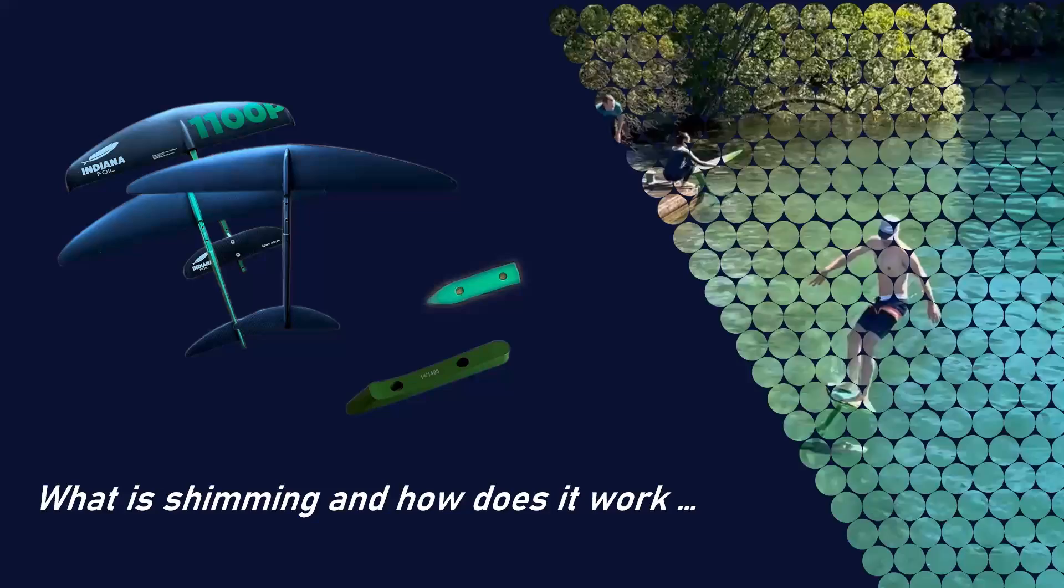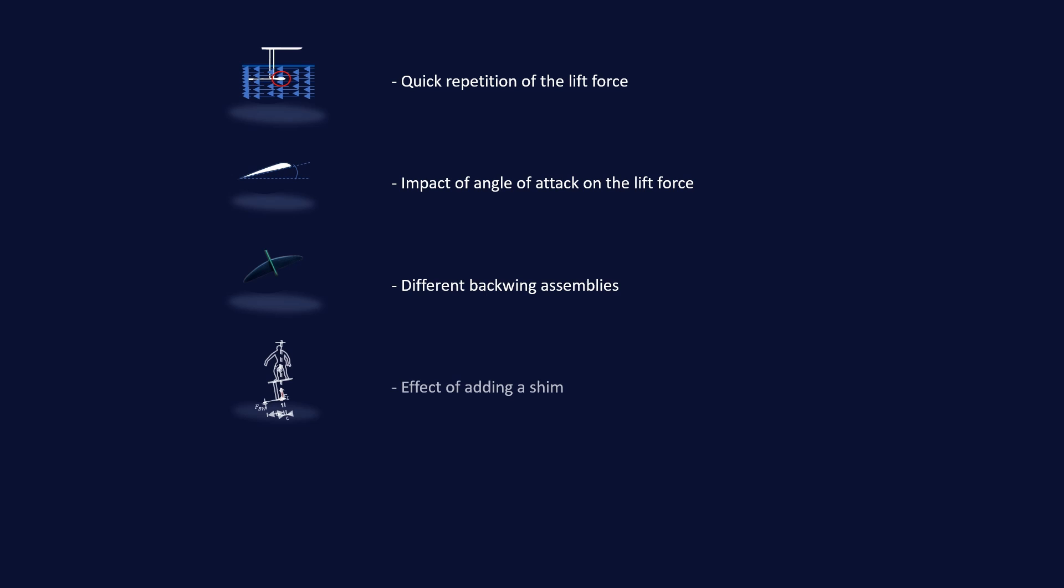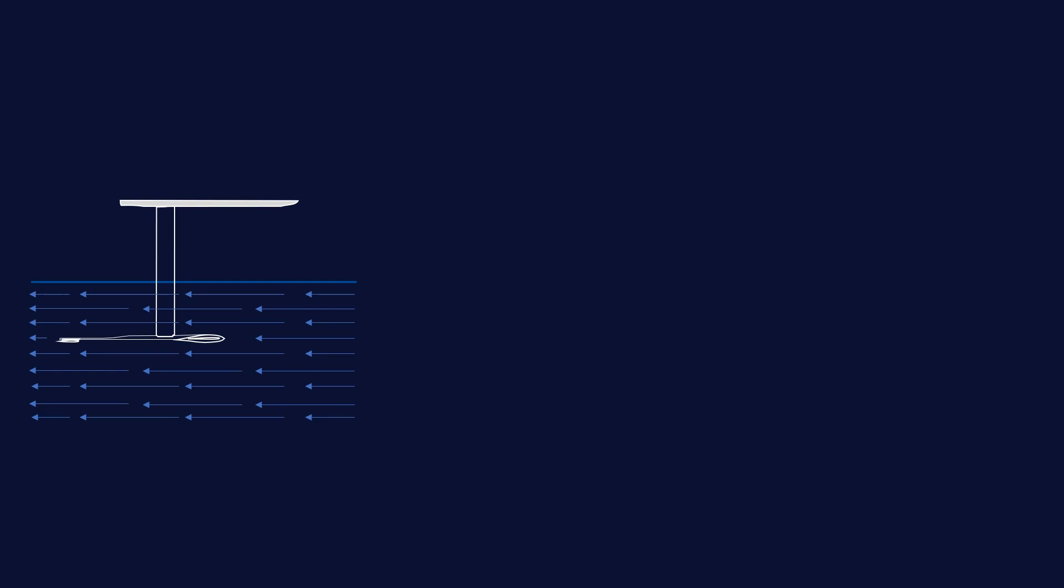To be in the position to explain shimming in the context of foiling, I will start with a quick recap about the lift force, explain the angle of attack, explain the different back wing assemblies, and then explain the effect of adding a shim and what a negative and positive shim is. To understand the effects of adding a shim, let us have a quick repetition about the lift force.